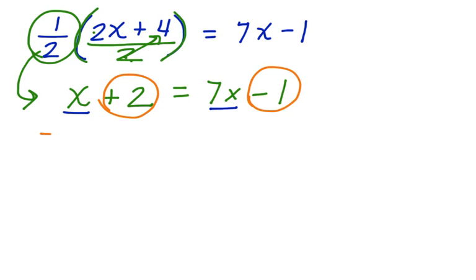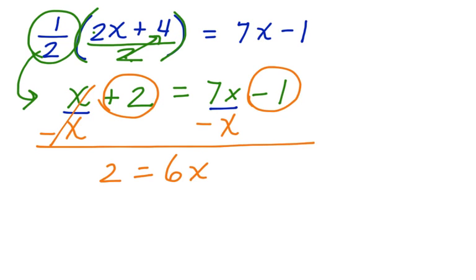First, let's subtract an x here and subtract an x here. These cancel. Bring down the 2 equals 7x minus an x gives me 6x minus 1. Let's add 1 to both sides, and I've got 3 is equal to 6x.